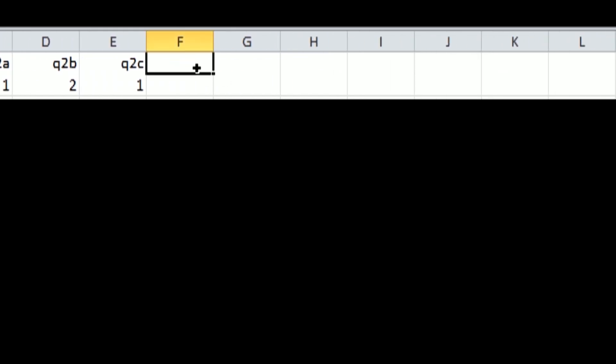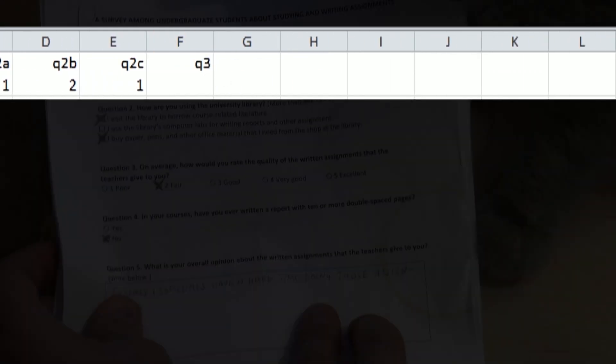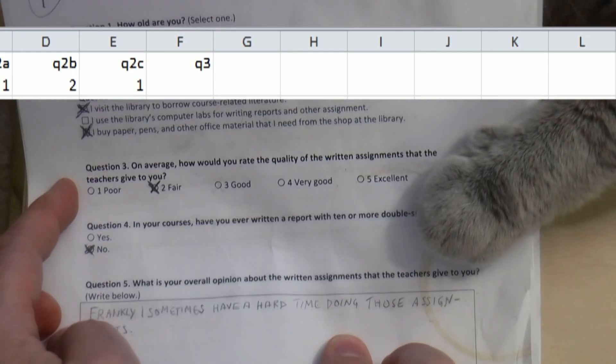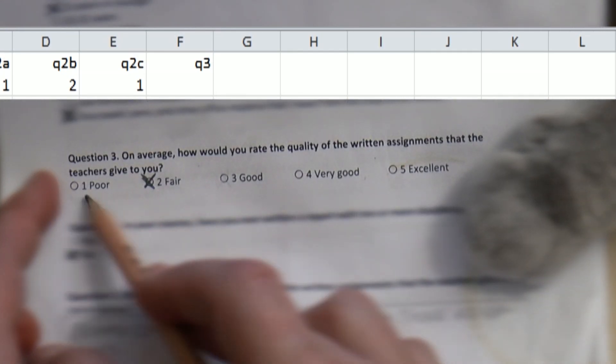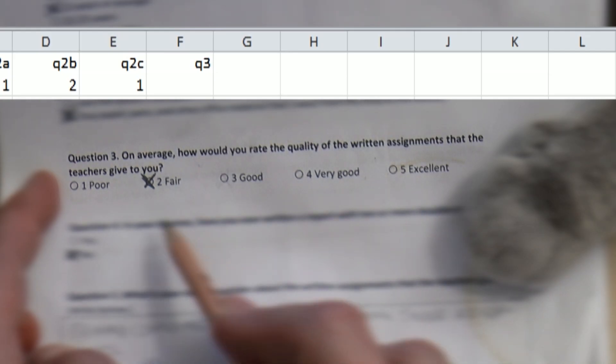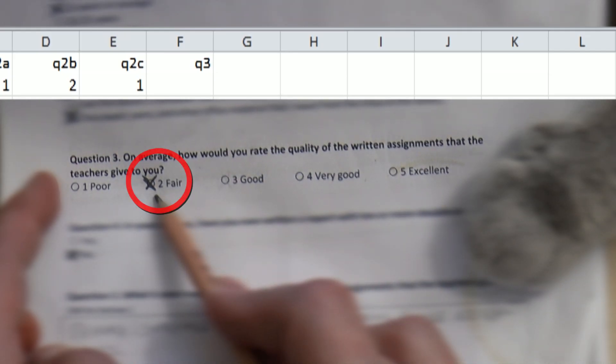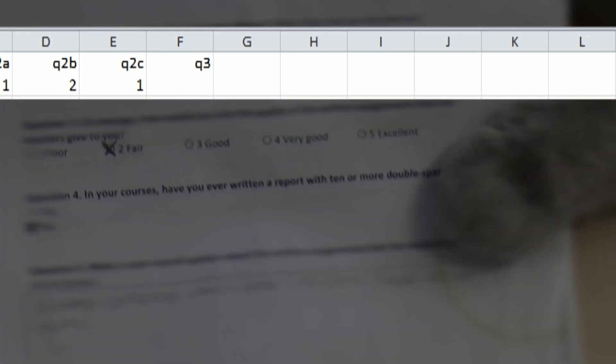Moving on, the header for question 3 is Q3 of course. I designed this question as a ranked scale as you can see, 1 through 5. The respondent has marked the second scale step, which means that I enter the digit 2.